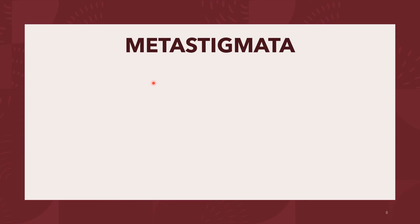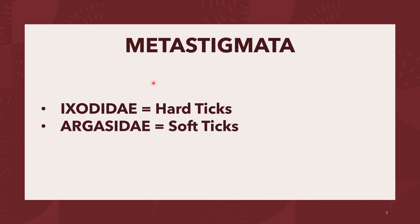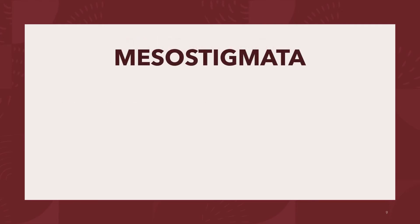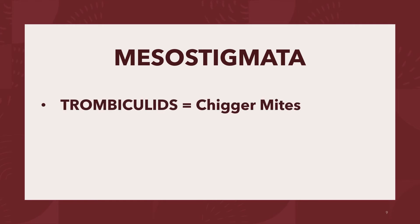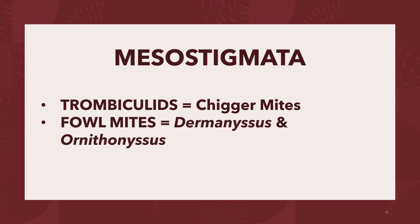The Metastigmata is the suborder representing the ticks, and all representatives of this group are parasitic in some part of the life cycle. The suborder Metastigmata is composed of the family Ixodidae and the family Argasidae. The Ixodidae are known as the hard ticks, and the Argasidae are known as the soft ticks. The group Mesostigmata contains the chigger mites or thrombiculids, and two fowl mites: Dermanyssus and Ornithonyssus. This group also contains many free-living species.